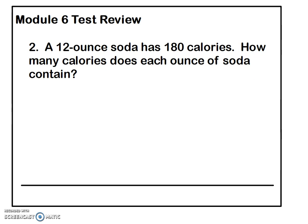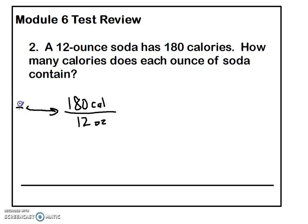Number two: a 12-ounce soda has 180 calories. How many calories does each ounce of soda have? I'd set this up as 180 calories over 12 ounces, because you'd calculate the calories per ounce as opposed to the ounces per calorie. This is a division problem — a fraction bar is a division problem. So this is going to be 180 divided by 12, because we divide each term by 12. I don't care about the number of calories in 12 ounces; I want to know the number of calories in one ounce.